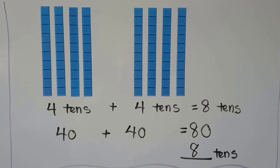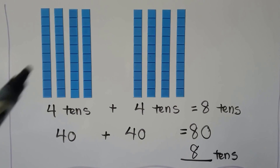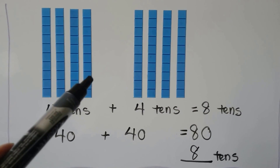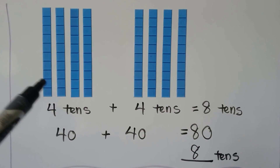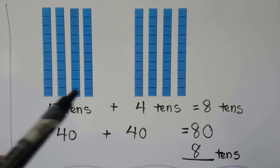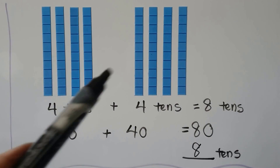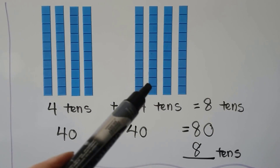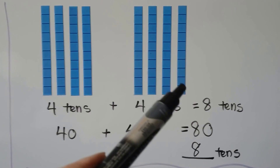We can count by tens starting with forty. We know this is forty: fifty, sixty, seventy, eighty.